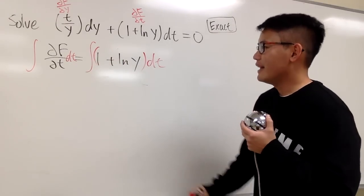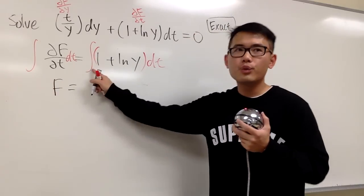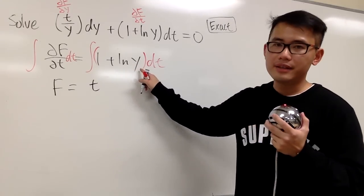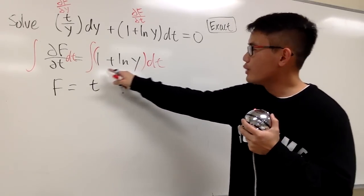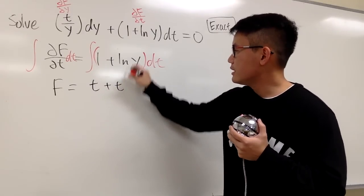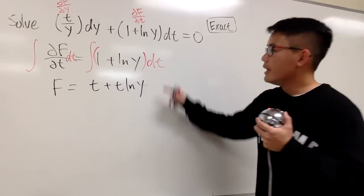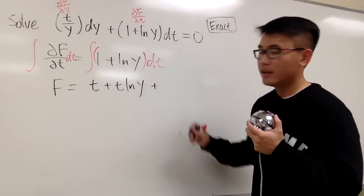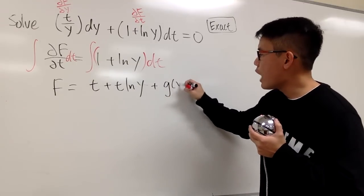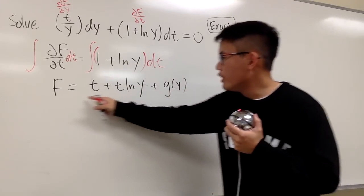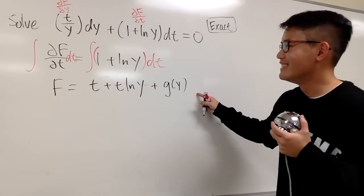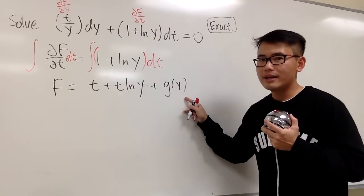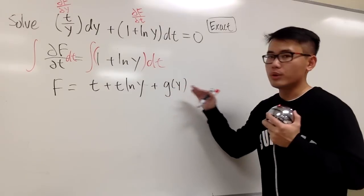So on the left-hand side we have F, and this equals the integral of 1 in the t world, which is just t. And ln y in the t world is a constant, so the integral of ln y is plus t times ln y. Now we have to add a constant, but since y is also a variable, we add not just a plain c but a function of y — call it g of y. When we differentiate this with respect to t, we get the original expression back, and g of y contributes 0.